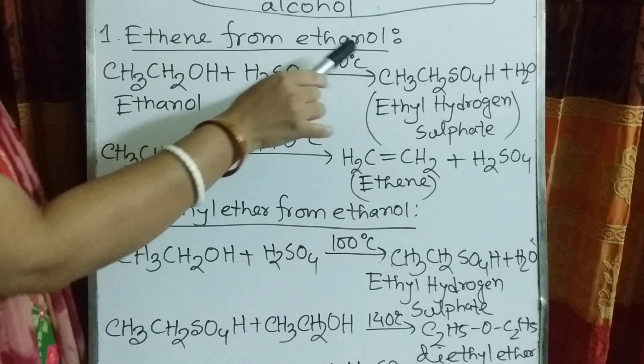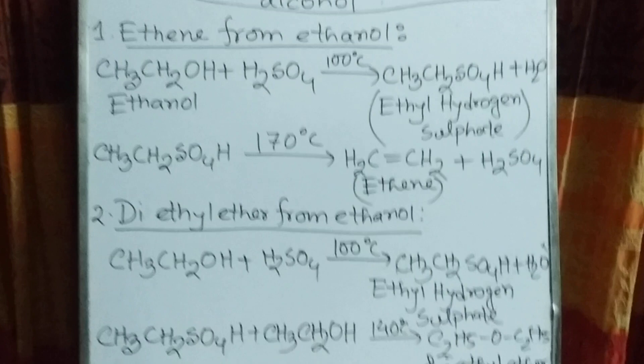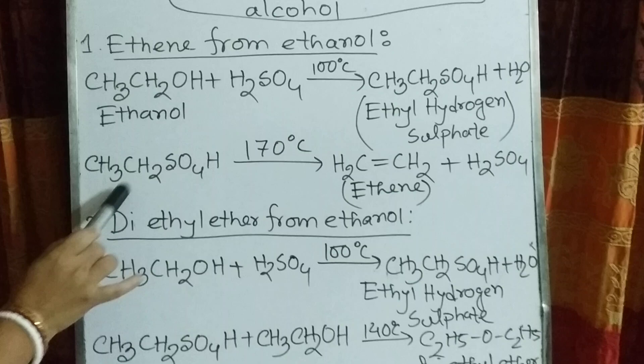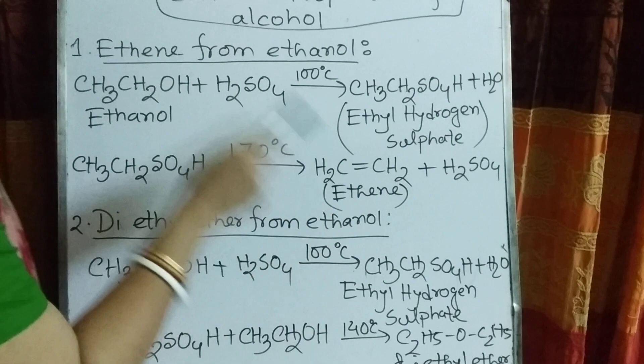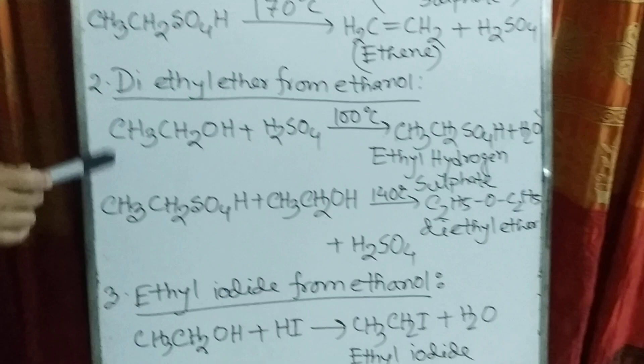First of all, we prepare ethene from ethanol. When ethanol reacts with sulfuric acid at 100 degrees Celsius, it forms ethyl hydrogen sulfate. This ethyl hydrogen sulfate at 170 degrees Celsius then prepares ethene by releasing H2SO4.